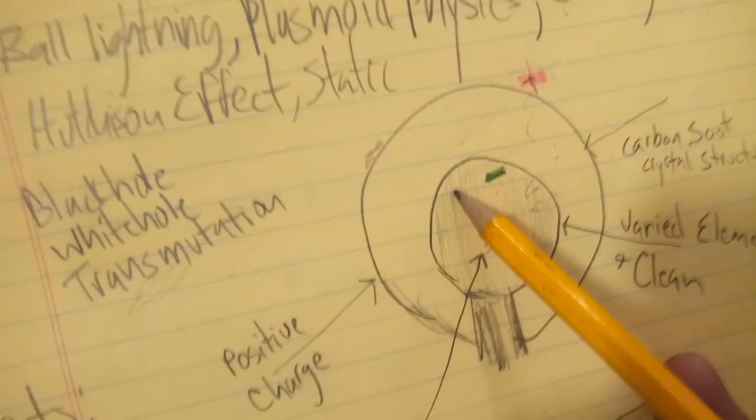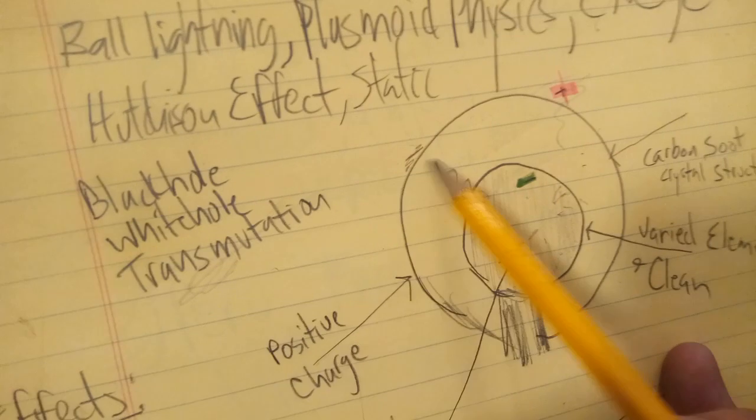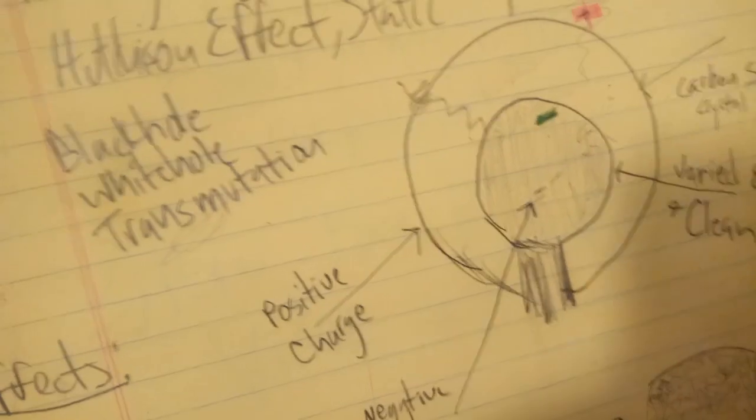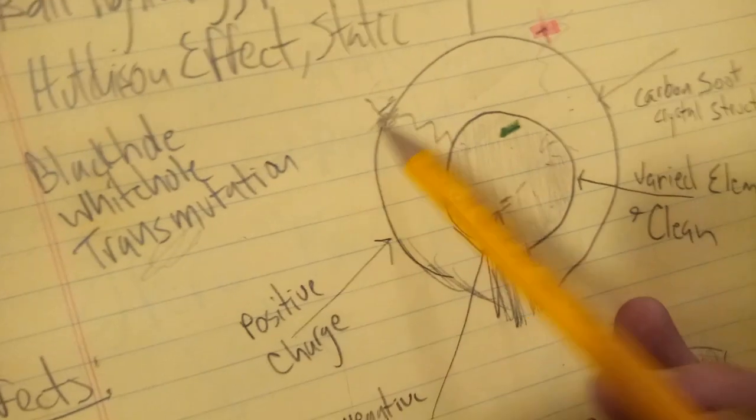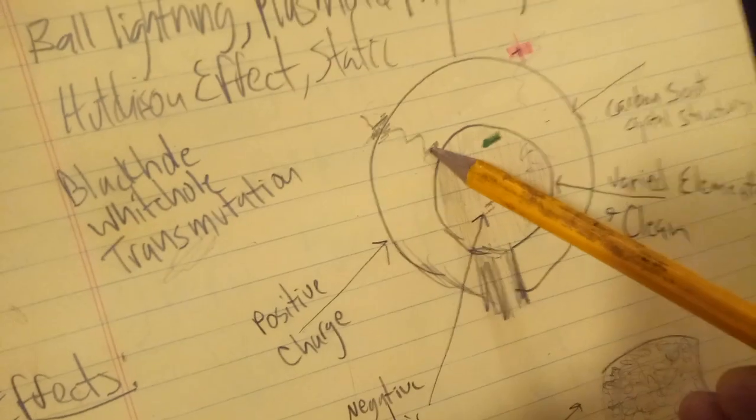What happens is the charge, once it builds up high enough, jumps across and creates an electrical discharge, an energy discharge. And these discharges have been leaving marks and elements.